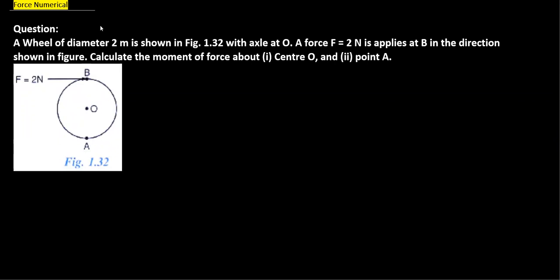You have given a wheel and the diameter of this wheel will be 2 meters, with axis at O. We have put the force here, you can see the force here. We have put the force on B in the direction shown.